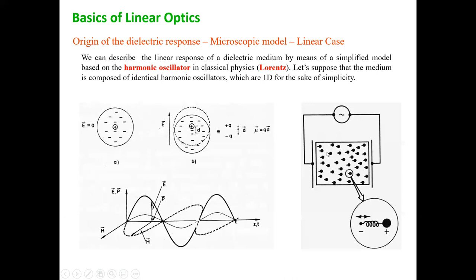A material will be constituted by atoms and molecules — it can be a crystal, an insulator, a semiconductor, a metal, whatever. We make a very simple model in which the single units of this material are approximated with a harmonic oscillator. We think that we have a positive charge with a negative charge attached to it by means of a spring.